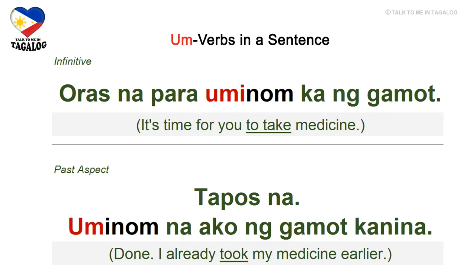Infinitive: oras na para uminom ka ng gamot. Oras means time, uminom here means to take, and gamot is medicine — it's time for you to take your medicine. Past aspect: tapos na, uminom na ako ng gamot kanina. Tapos na means done, na is already, and kanina means earlier — done, I already took my medicine earlier.